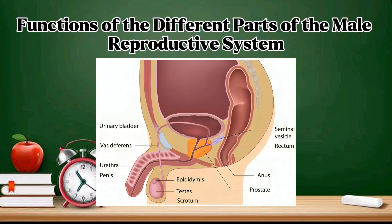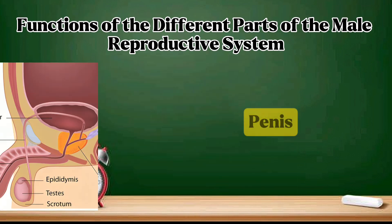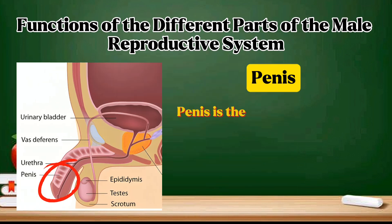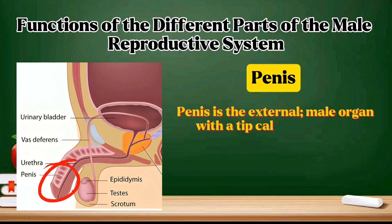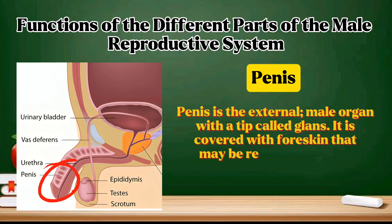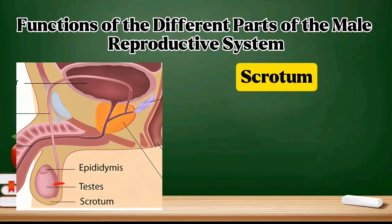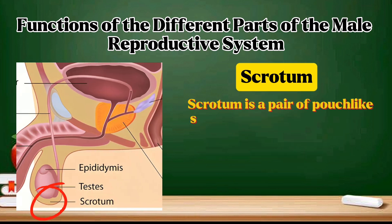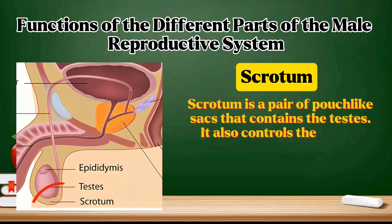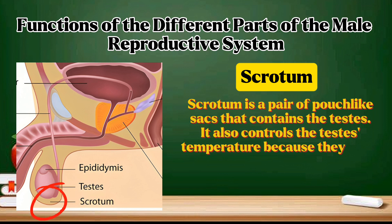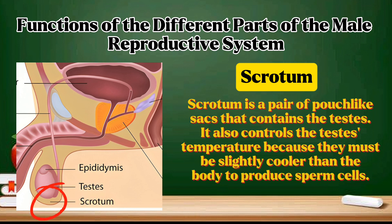Penis: the penis is the external male organ with a tip called the glans. It is covered with foreskin that may be removed through circumcision. Scrotum: the scrotum is a pair of pouch-like sacs that contains the testes. It also controls the testes' temperature, because they must be slightly cooler than the body to produce sperm cells.